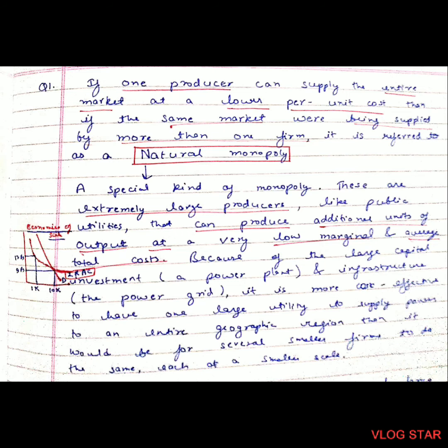Hello everyone, here is Microeconomics MCQs Part 2. Question 1: If one producer can supply the entire market at a lower per unit cost than if the same market were being supplied by more than one firm, it is referred to as natural monopoly. In natural monopoly, a monopoly has economies of scale, so at a lower per unit price it can provide to the whole market.